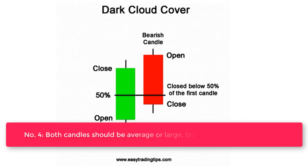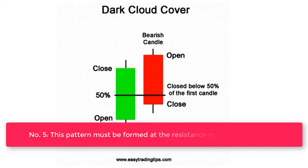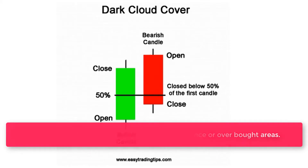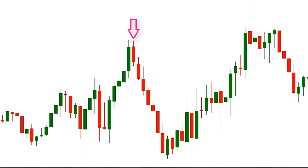Number four, both candles should be average or large, but not too large or too small. Number five, this pattern must be formed at resistance or overbought areas. These five points are very important for identifying a hundred percent perfect dark cloud cover candlestick pattern. For best results, we should only use this pattern when it is formed after at least three or more green candles. Thank you for watching.